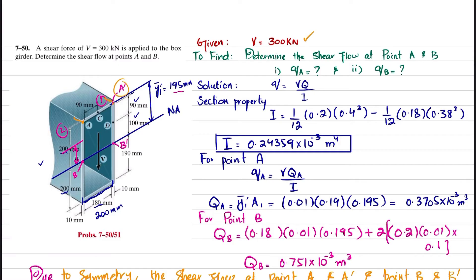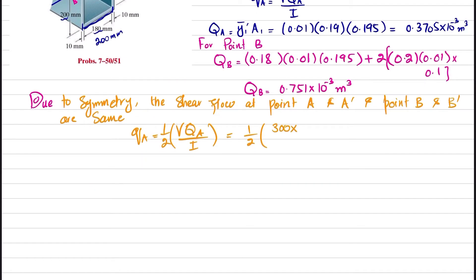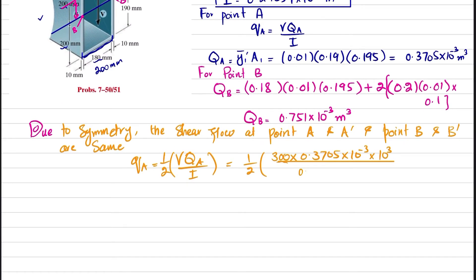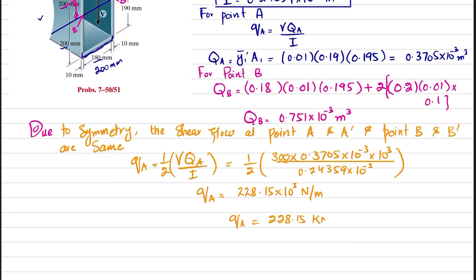Shear flow at point A = (1/2) × V × Q_A / I = (1/2) × (300 × 10³) × (0.3705 × 10⁻³) / (0.24359 × 10⁻³). When calculated, shear flow at A = 228.15 × 10³ N/m, or q_A = 228.15 kN/m.